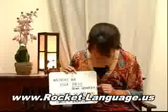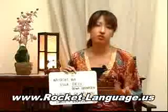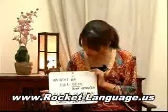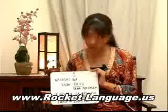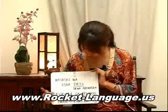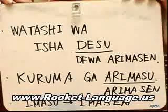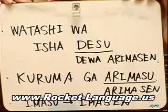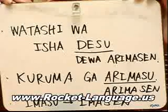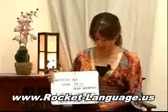The denying part is right here: 'masen.' When you hear '-sen' at the end, it's pretty much a denial. For example, using 'there is / there are': 'Kuruma ga arimasu' means 'There is a car.' To say 'There isn't a car,' you say 'Kuruma ga arimasen.'